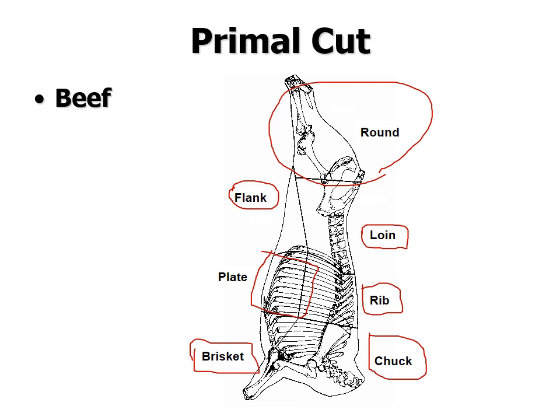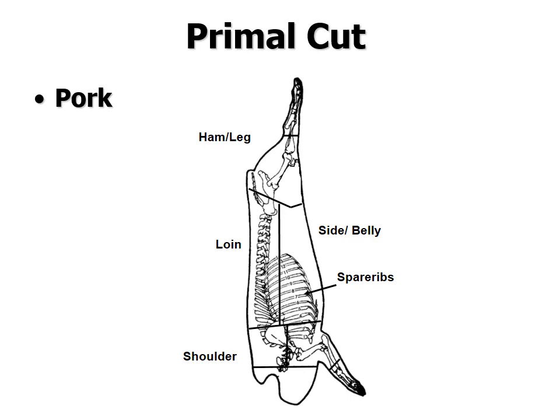The bottom part of the long ribs is called the plate — the skirt steak is also found in the plate. The flank primal is last, and the only thing that comes from it is the flank steak. In pork, similar cuts but not exactly the same: the back leg is called the ham. Cuts with vertebrae are the loin, the front end is the shoulder, and where the bacon is found is called the side or belly.